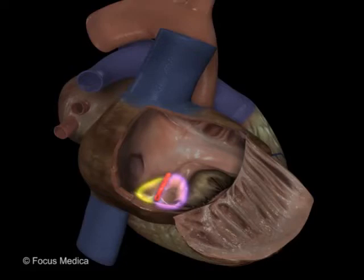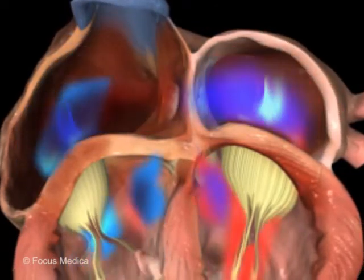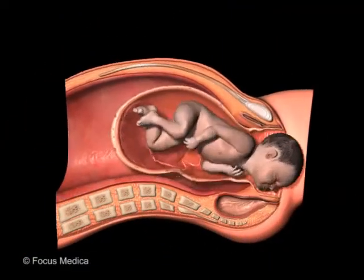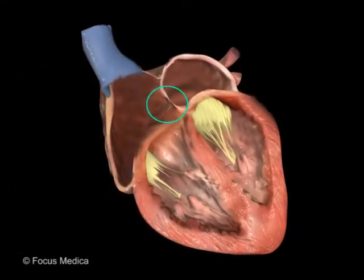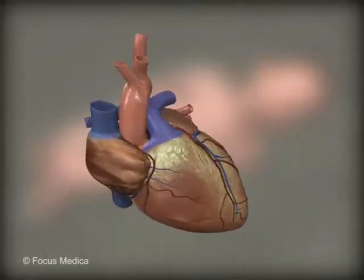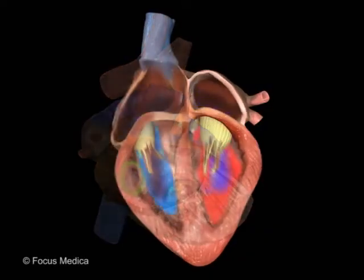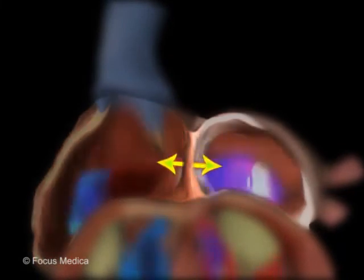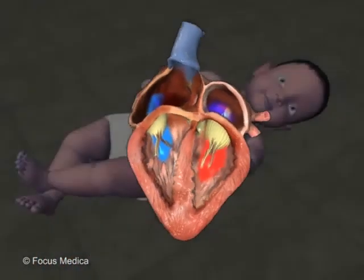The foramen ovale is a valvular opening seen in fetal life only and it closes at birth. Thereafter, its position is seen in the fossa ovalis as a closed septum. A patent foramen ovale disrupts the pressure balance between the right atrium and left atrium and can manifest as cyanosis.